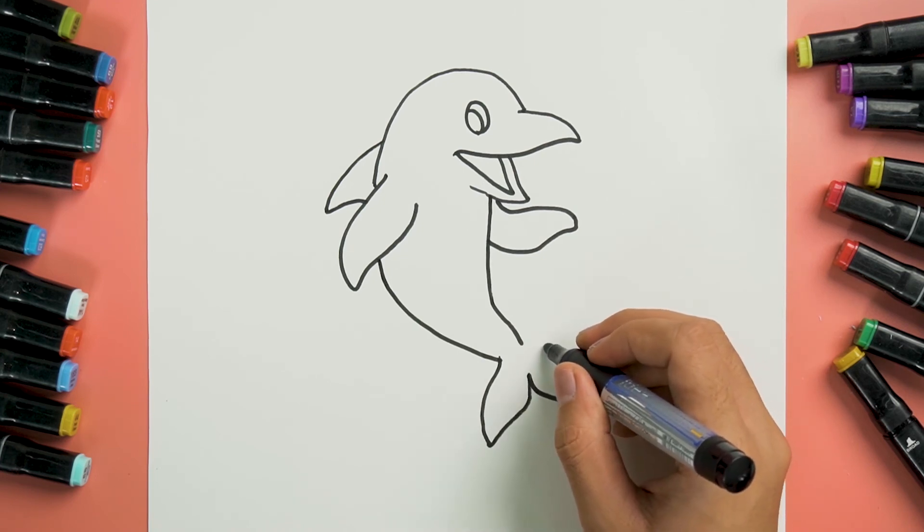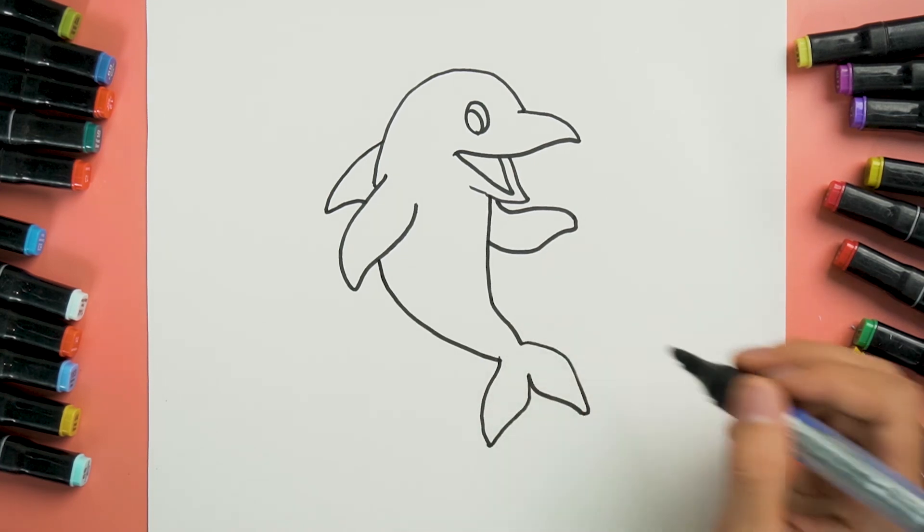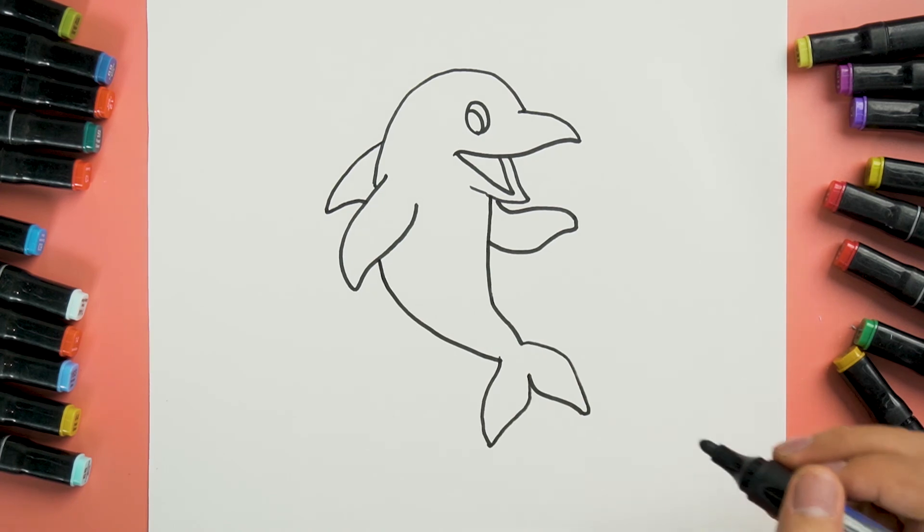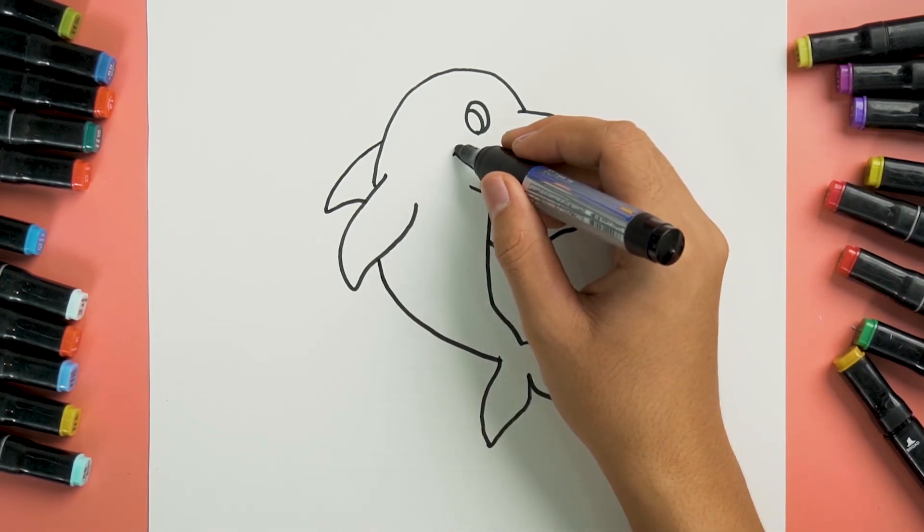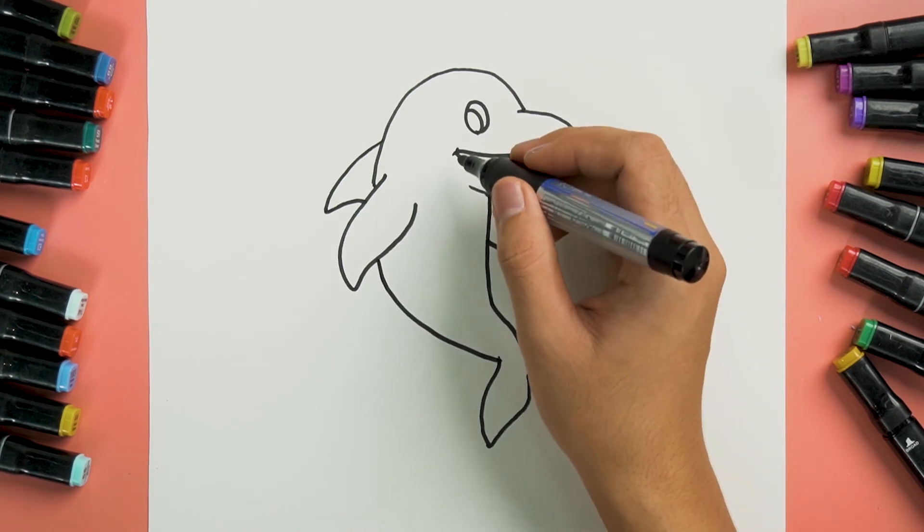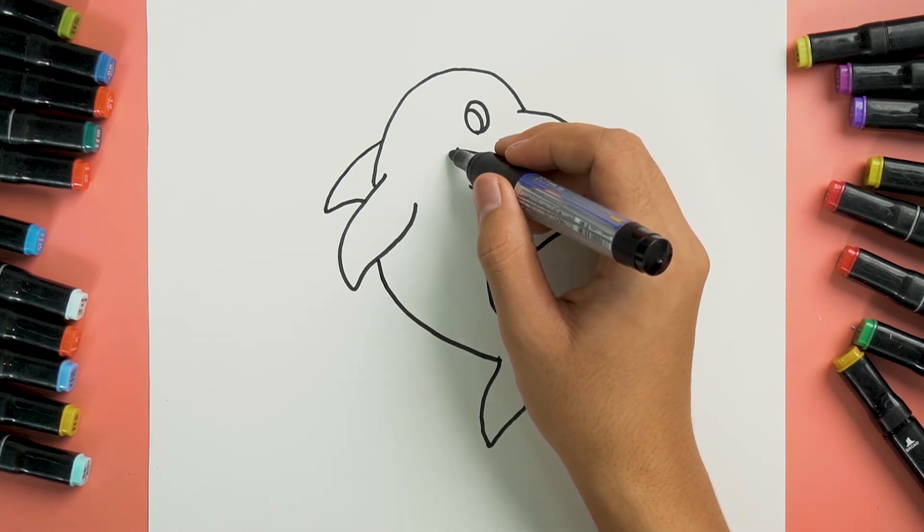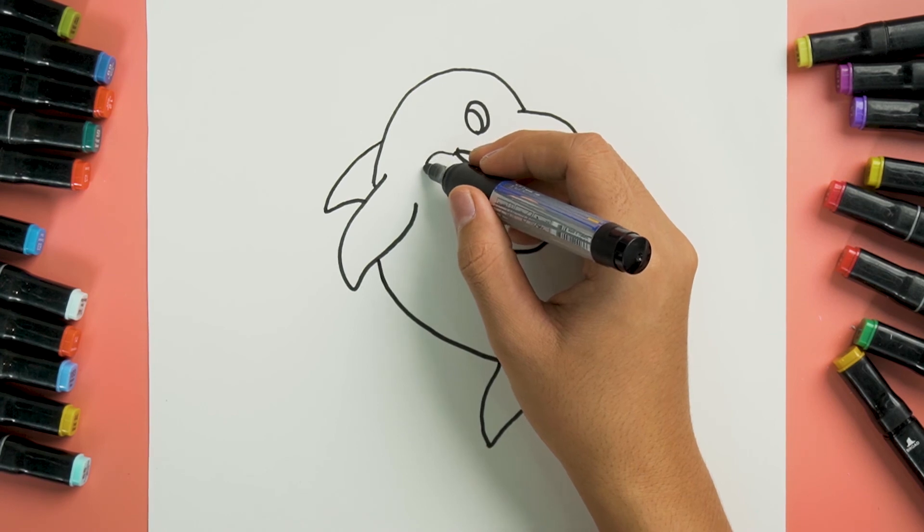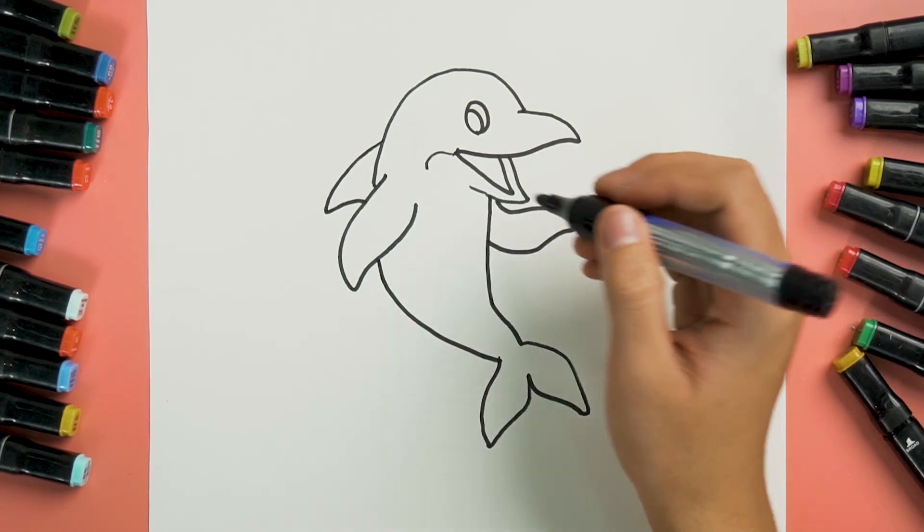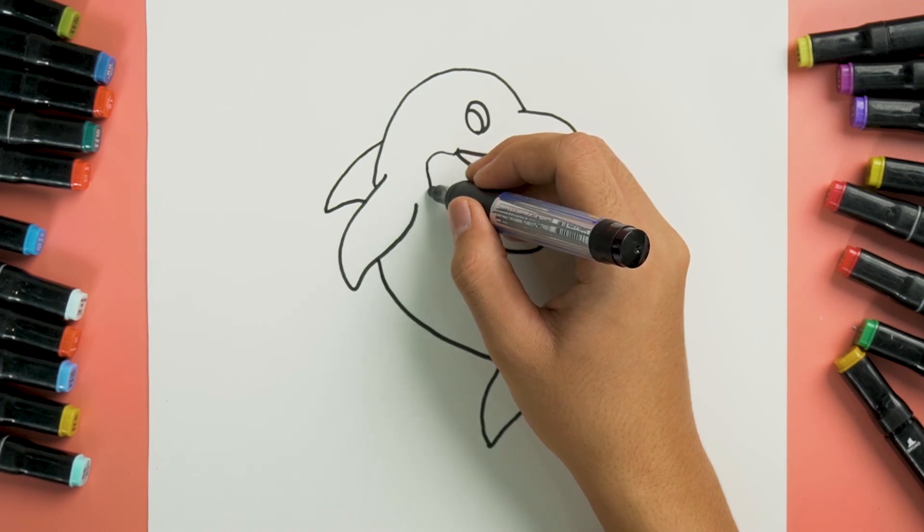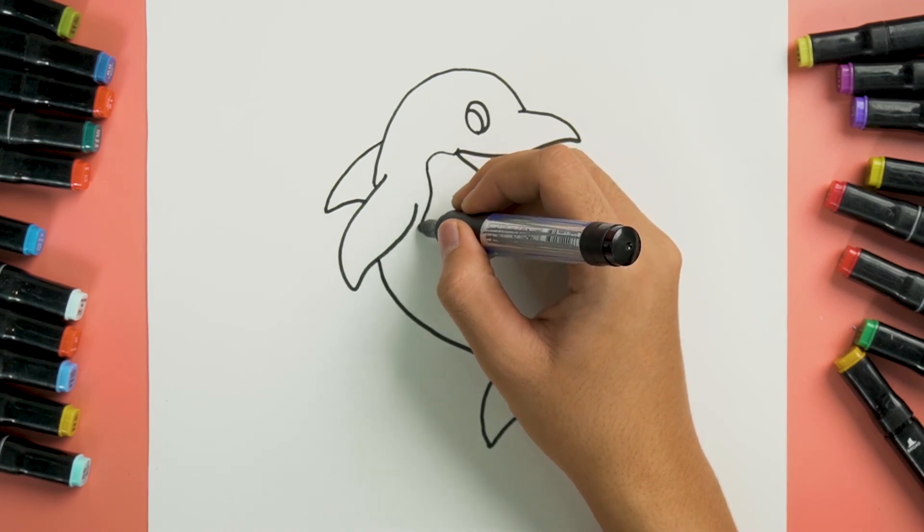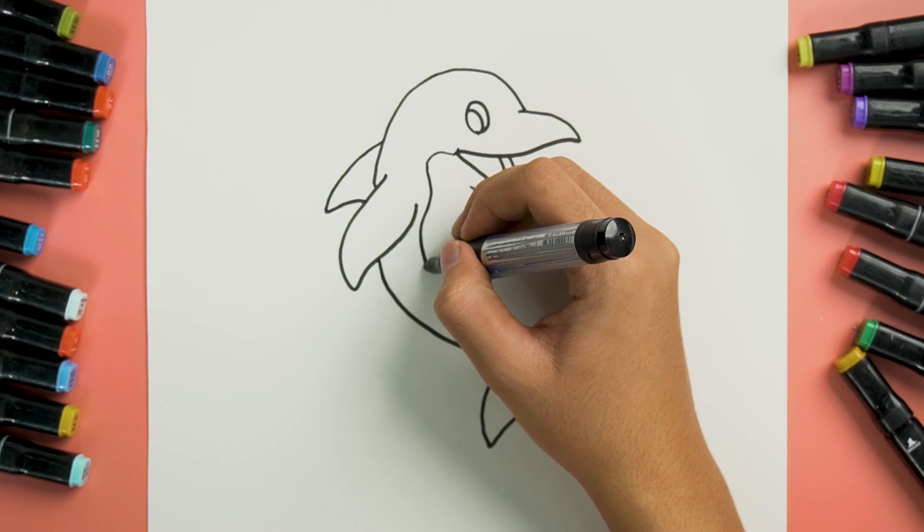Follow closely and carefully. Here, we should put a very tiny line to his mouth and start to draw a curve like this from his mouth. Continue the line along to his belly. We will finish the line here.